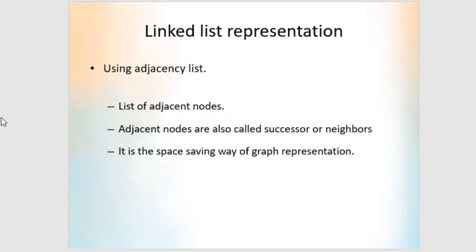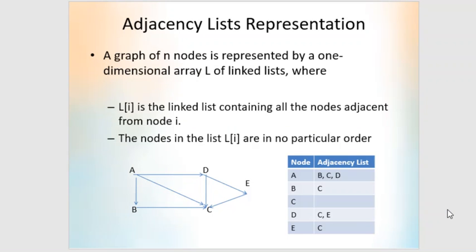Next is the linked list representation of graphs. We can use an adjacency list to represent graphs, using a list of adjacent nodes. Adjacent nodes are also called successors or neighbors. This method saves memory compared to matrices, where there is a chance of huge wastage of memory.